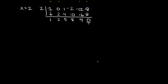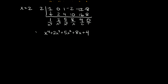Now we list out our coefficients with their terms. Remember: this is the constant, this is the x term, this is x squared, x cubed, and x to the fourth. So our new polynomial is x to the fourth plus 2x cubed plus 5x squared plus 8x plus 4. This is still not easy to factor, so we're going to have to go through the p over q process one more time and do synthetic division one more time.